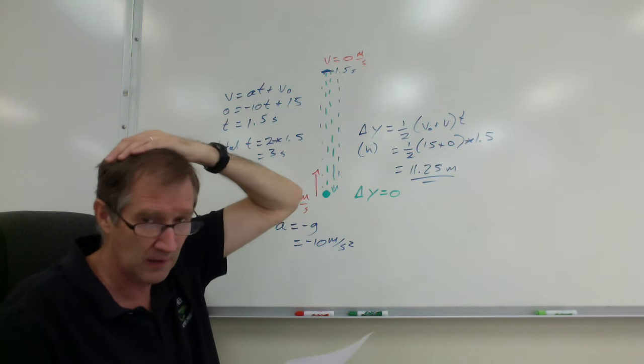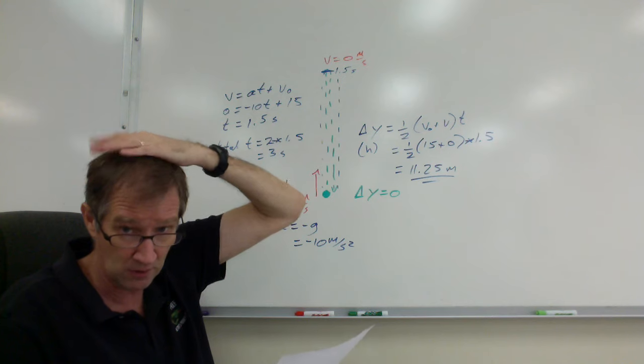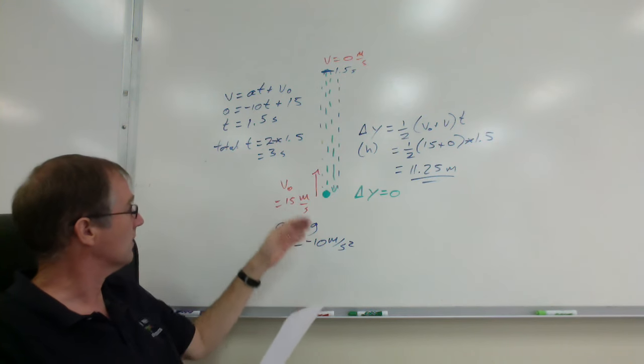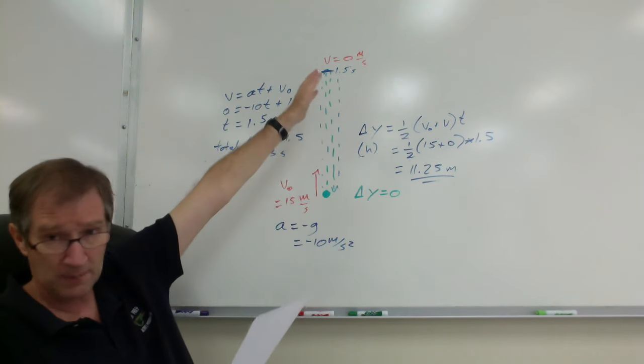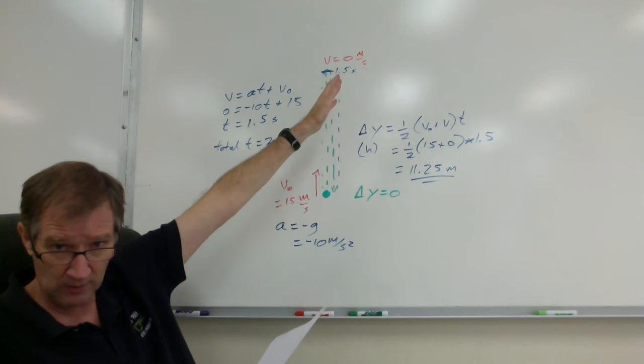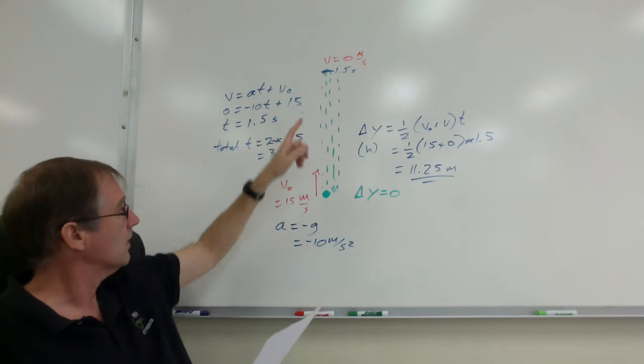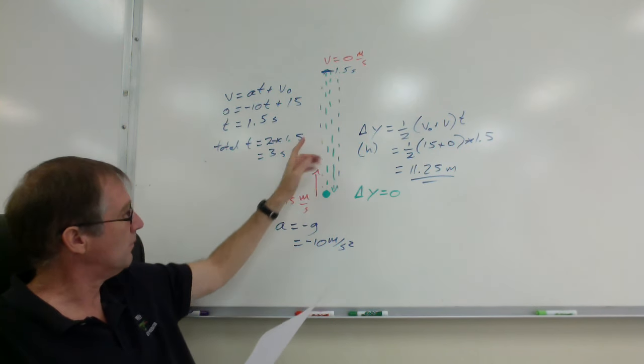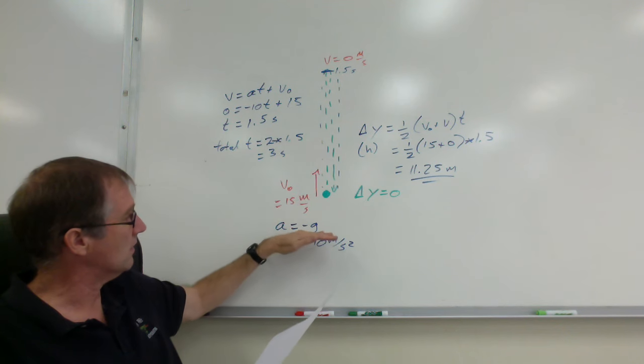And what's its acceleration at its highest point? It's negative g. In this case, I'm using negative 10. Even when it stopped at the apex, it still has acceleration. Otherwise, it would never come down again. It has acceleration, the same acceleration of negative g, negative 10,